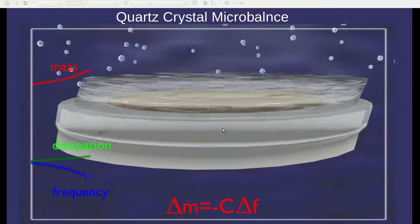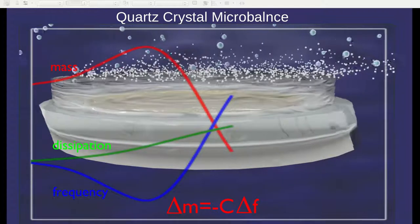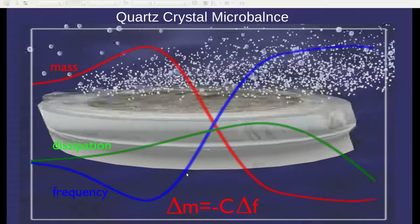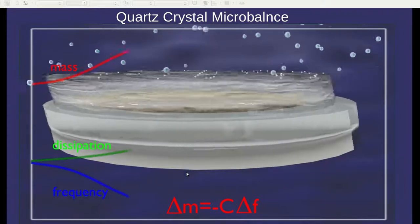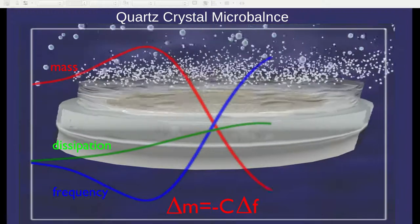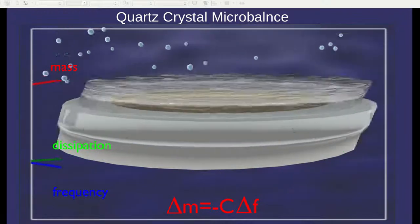The resonant frequency of the oscillation is related to the mass, as given by the equation at the bottom, where delta m is the change in mass, which equals some constant, which is a function of the crystal parameters, times the change in frequency. The overlying graph shows an example of what the dissolution measurement may look like with a QCM.